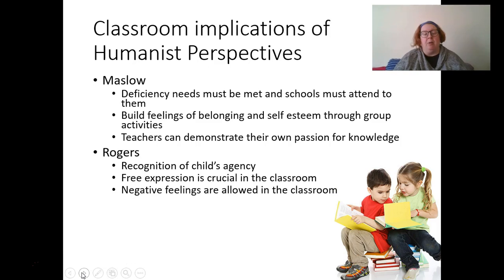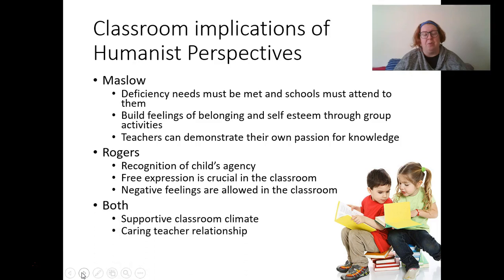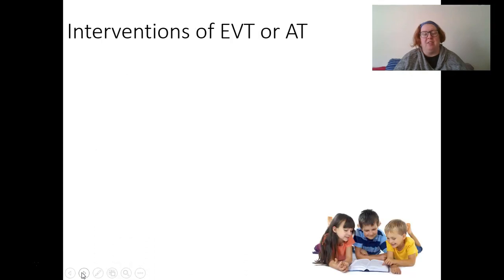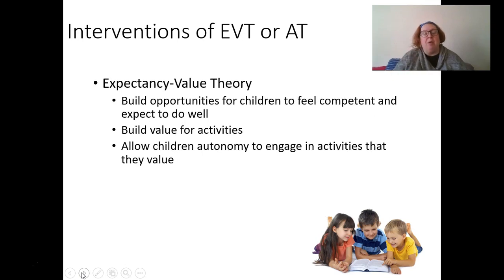Thinking about recognition of the child's agency, free expression, negative feelings allowed in the classroom, and creating caring relationships with teachers. The interventions of attribution theory and expectancy-value theory focus on building opportunities for students to feel competent and expect to do well — building those mastery experiences. We can all think of times we didn't expect to do well in something, so we had low motivation. We also think about how to build value for activities in class: helping students see the utility value and task value, letting them know it's important for this class, for their lives today, or for their lives in the future, and allowing children autonomy to engage in activities they do value.